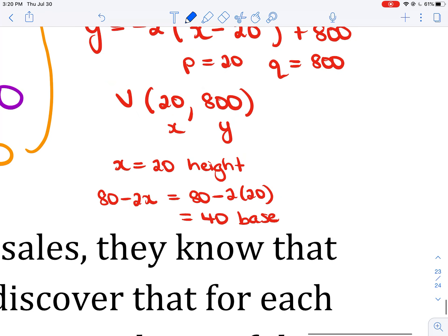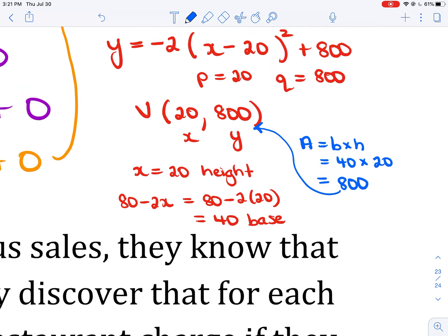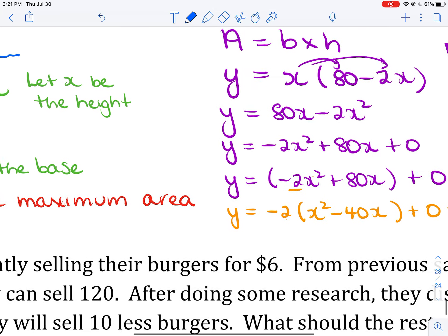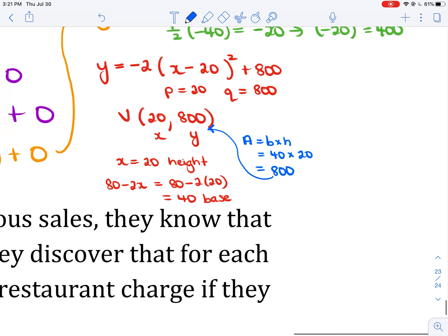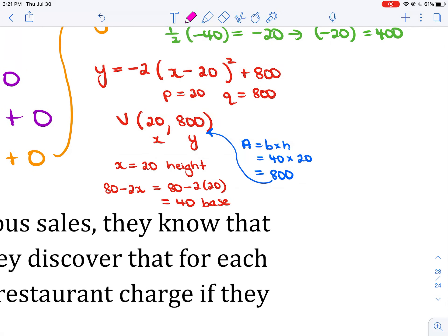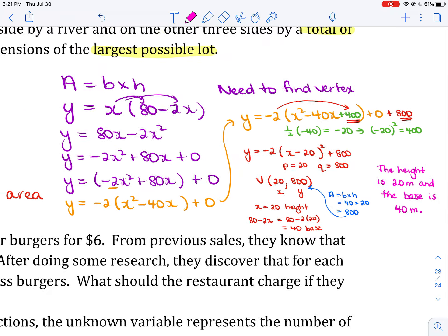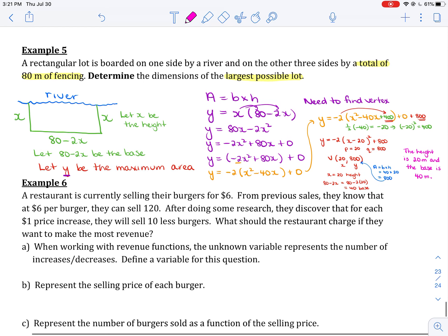Well, guess what? If you found the area, area being base times height, if you went base of 40 times height of 20, you'd get 800, which is that y coordinate of the vertex. And look what we defined y to be over here. We said in my red writing, let y be the maximum area. So, that makes sense. Now, it asks for the dimensions. So, we should write this in a sentence. We should say, the height is 20 meters and the base is 40 meters. And there's the dimensions of our rectangle.